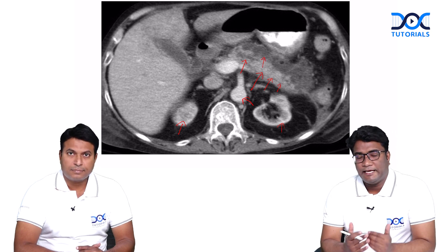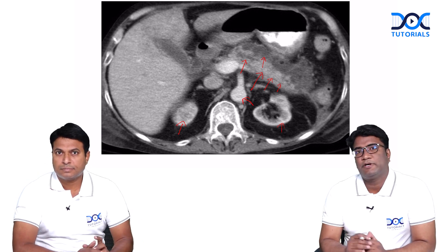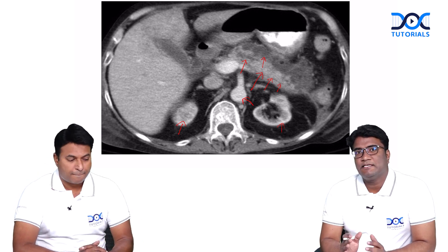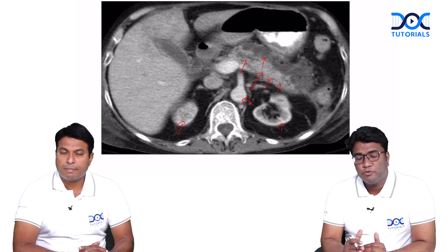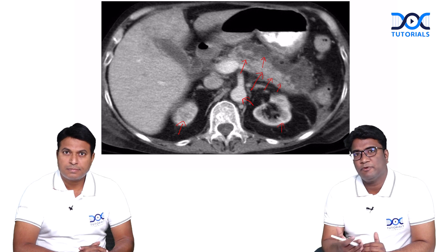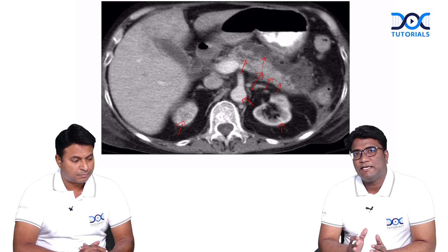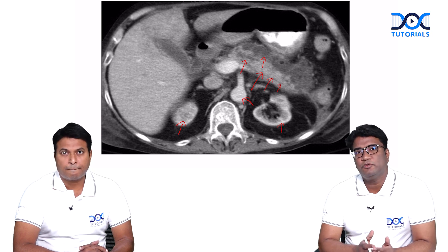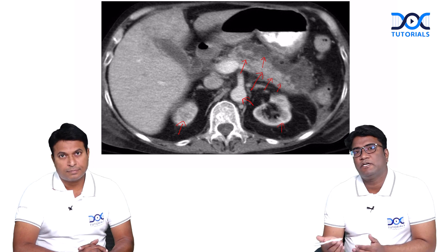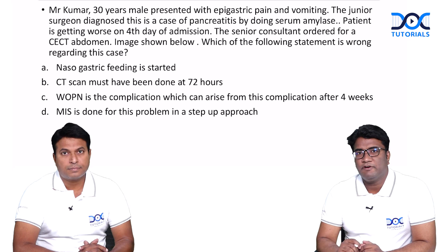When you have such an inhomogeneous pancreas with some enhancing and non-enhancing areas, think of necrotizing pancreatitis. This is a very severe type of pancreatitis with extra complications. The reason we advise CECT after 72 hours is to look for such complications — do not advise contrast CT in the first initial part of admission, as you would not be able to see these complications developing. Always advise it after 72 hours, as in this question where it was done on the fourth day.